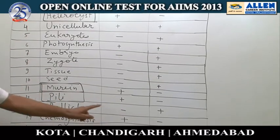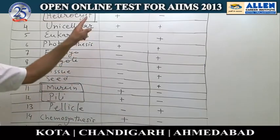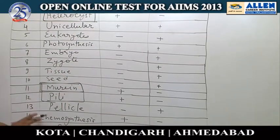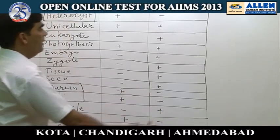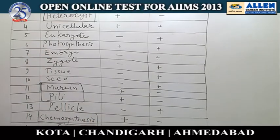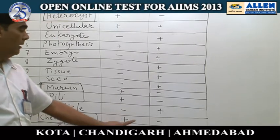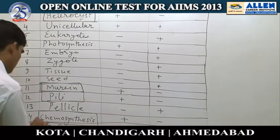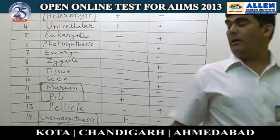Pellicle is not present in Monera. Chemosynthesis is the process present in Monera but not in other kingdoms — so that's another exclusive character. Nitrogen fixation is present in Monera and not present in other kingdoms.